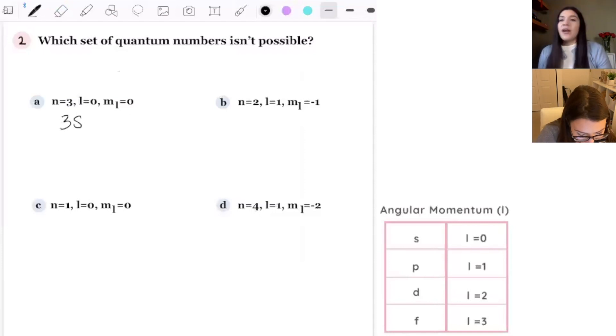Okay. So we know a is out because that one's valid. That one's correct. So now moving on to b. So b is n equals 2. So we do 2. And l equals 1, which is p. Good. And 2p is possible.